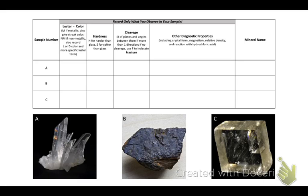In the luster column, you will describe if the mineral exhibits a metallic luster, or if not, if it's light or dark colored and the specific luster of the mineral. In the hardness field, you will identify if the mineral has a hardness greater than glass or softer than glass. In the cleavage field, you will identify if the mineral exhibits cleavage, and if so, how many cleavage planes it has. If it doesn't have cleavage, you will mark that it has fracture.